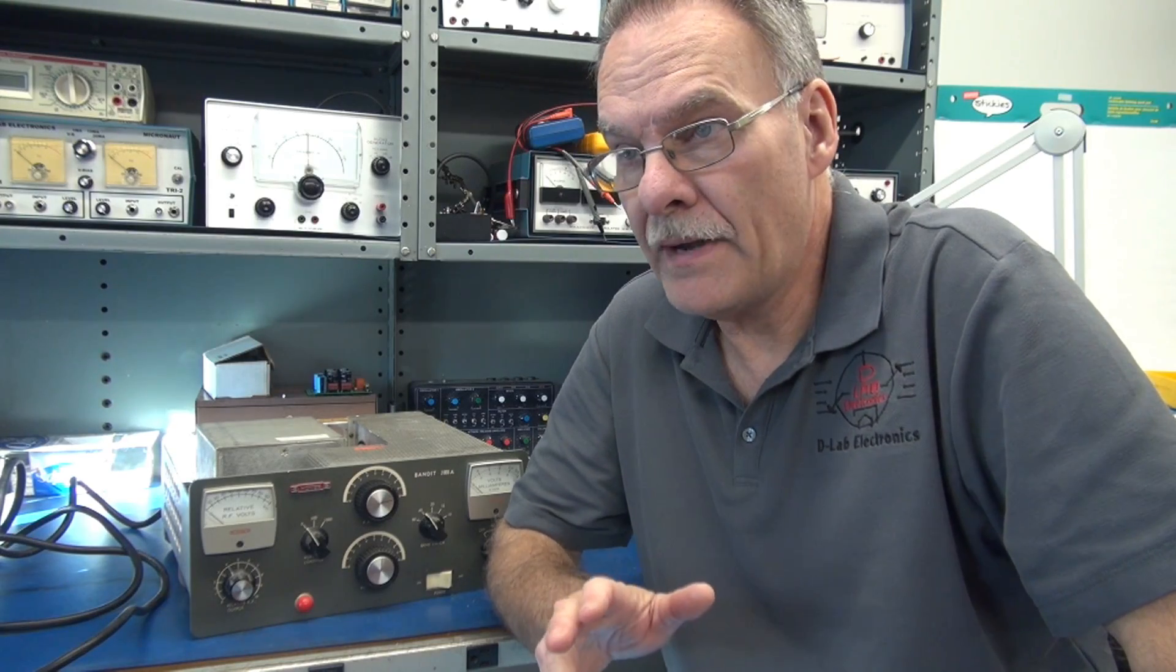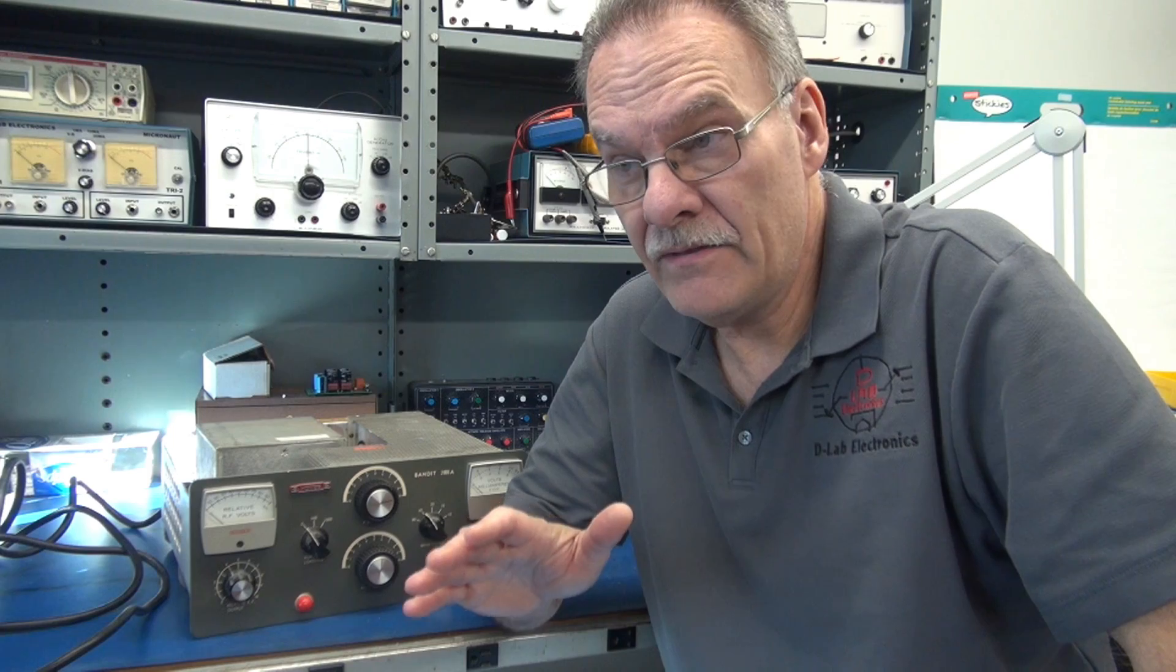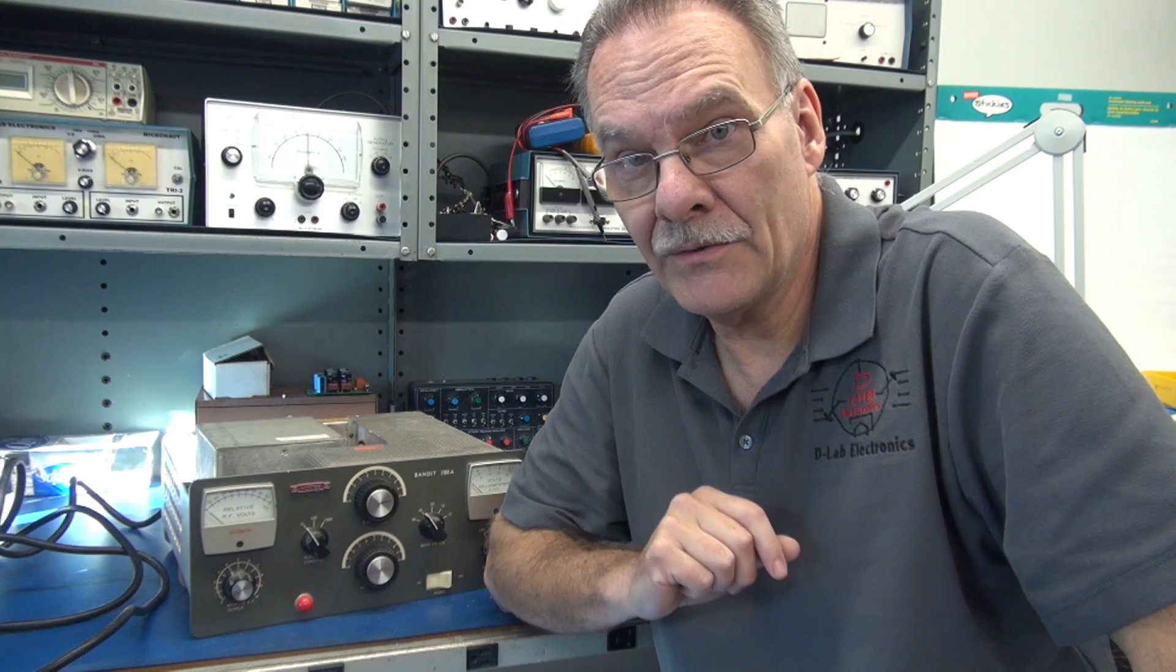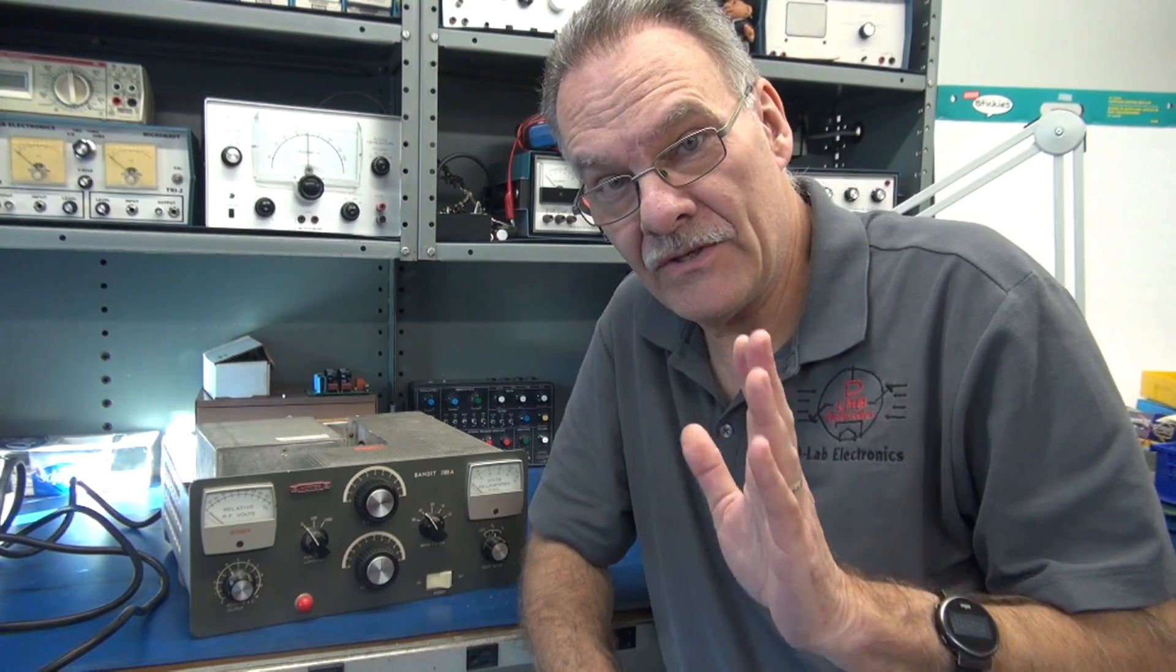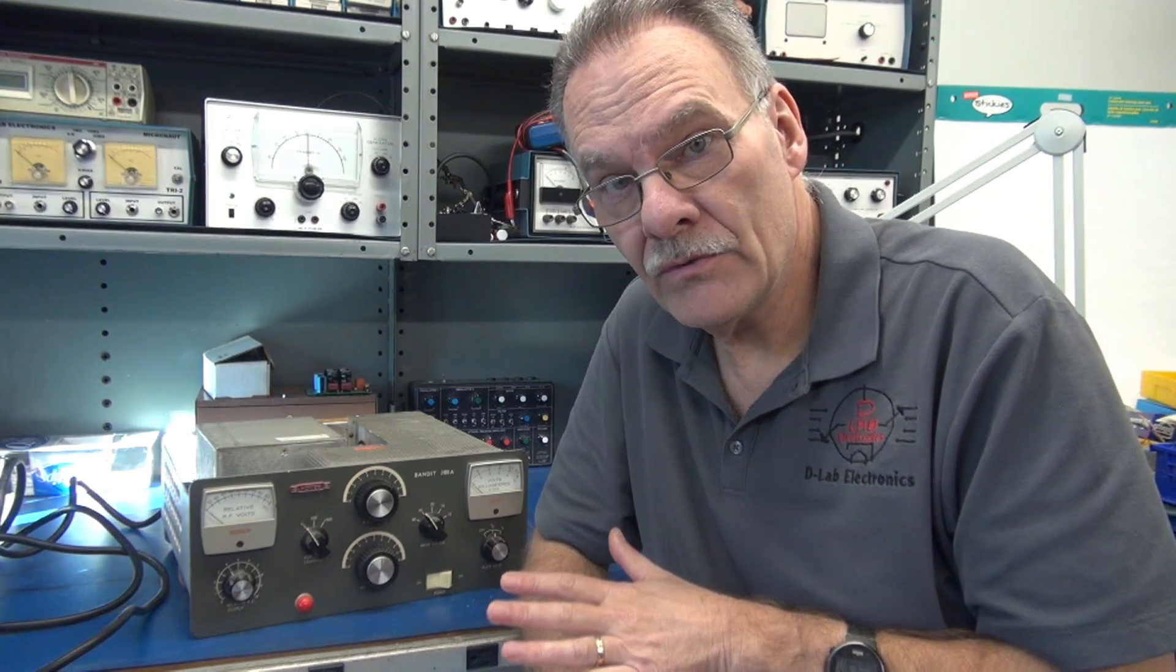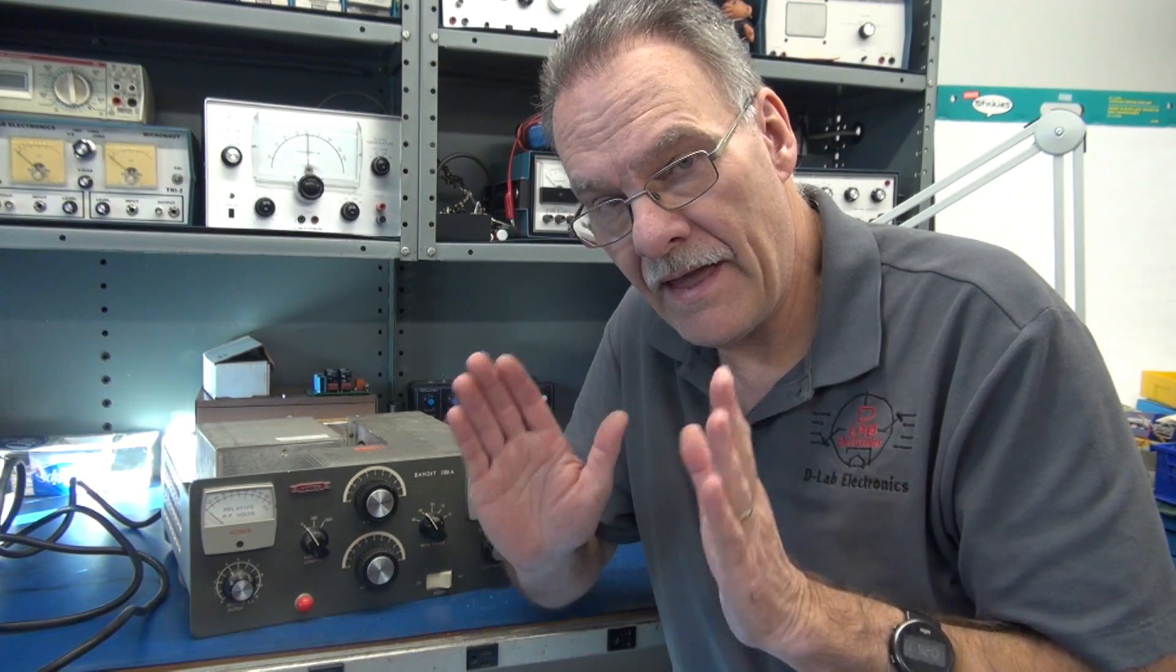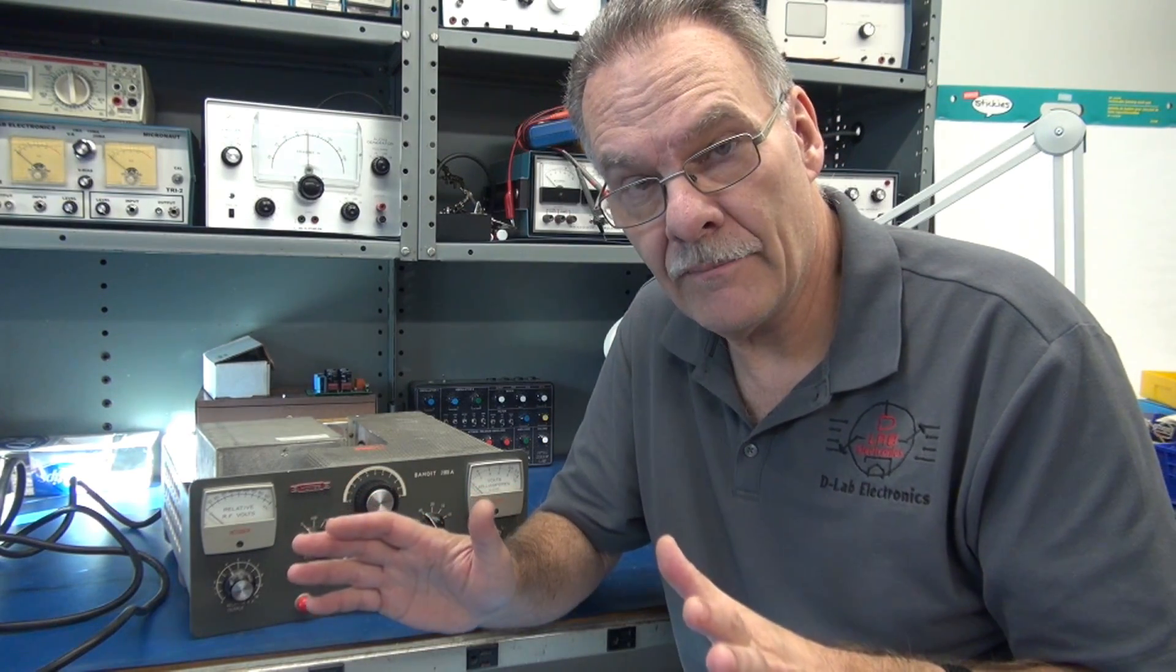Okay, here we go. Initial power up of the Hunter Bandit after replacement of the filter caps. Now just to let you guys know, I've had this amp for about 15 years and I have never applied power to it. So there could be some little surprises. But as a safety measure, this amp is wired for 220 volts. I'm actually going to power it with a Variac at 120 volts. So we're going to run it at half power just to verify that we have high voltage and see things light up.